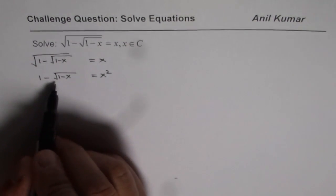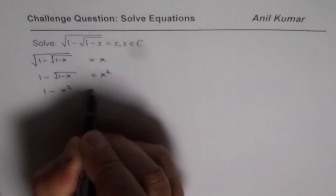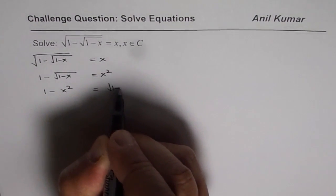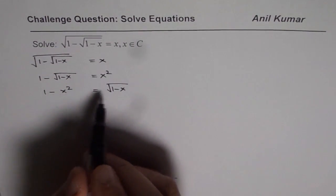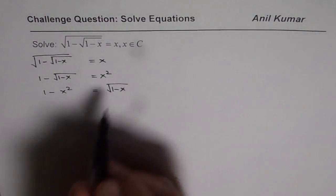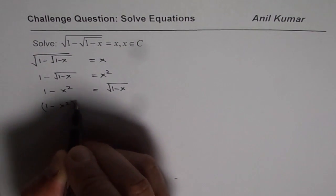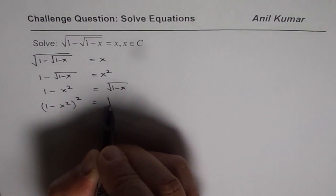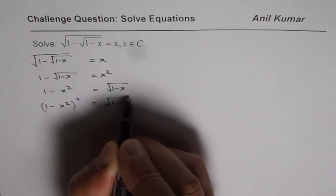Now we can isolate square root terms. So we will get 1 minus x square equals square root of 1 minus x. And again let us square both sides to get rid of this radical sign. So that is to say 1 minus x square whole square equals square root of 1 minus x whole square.